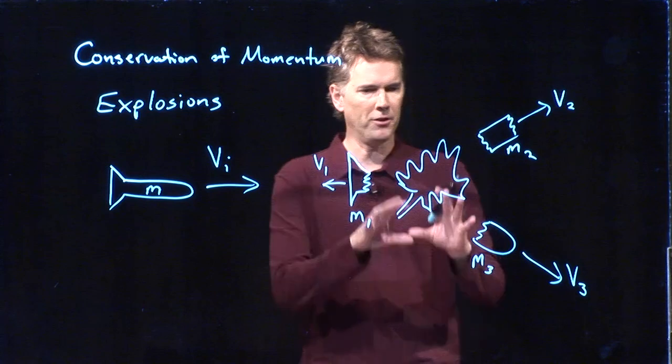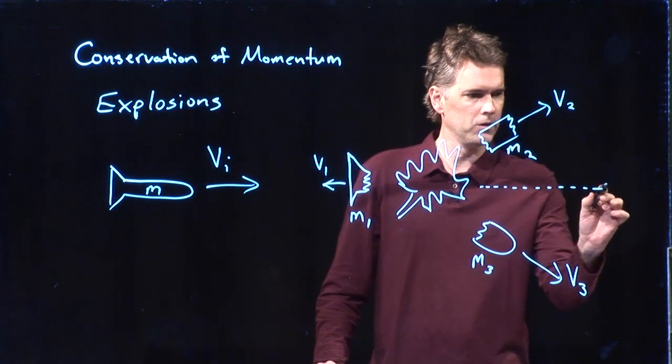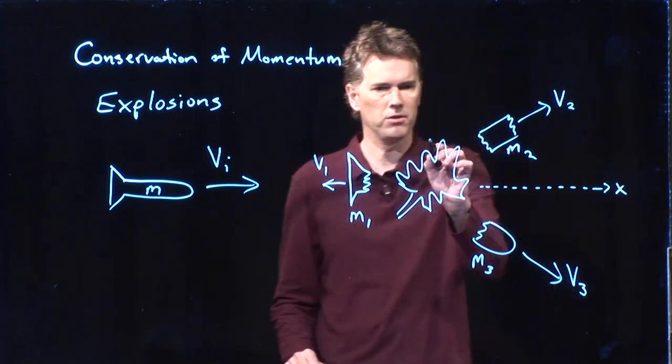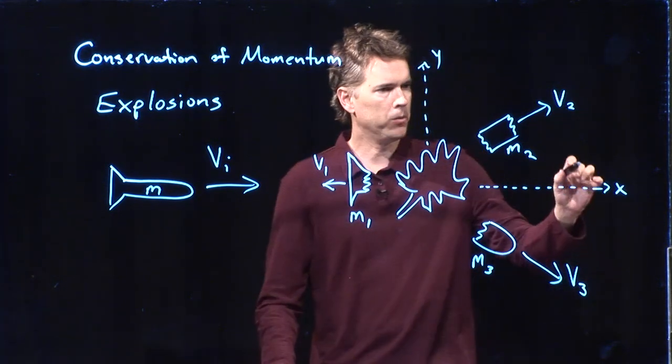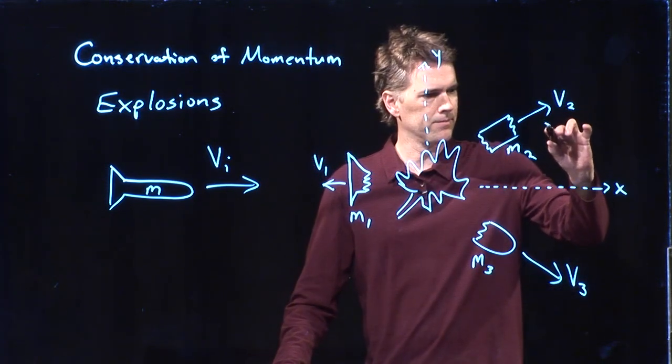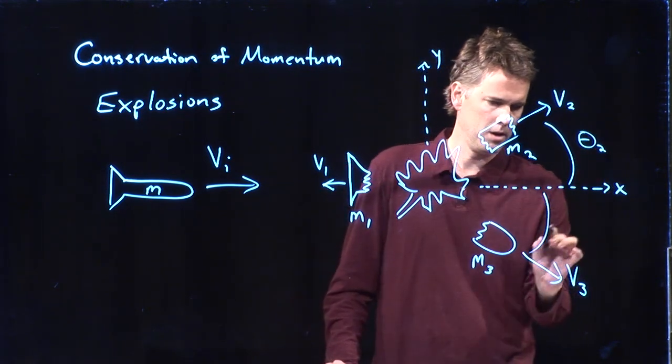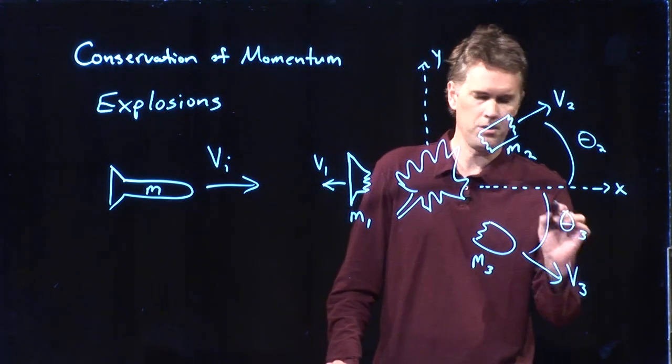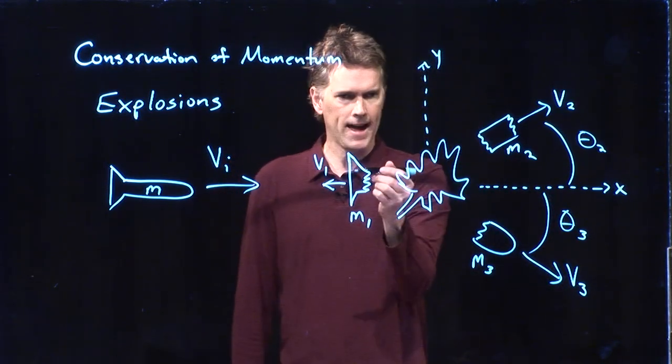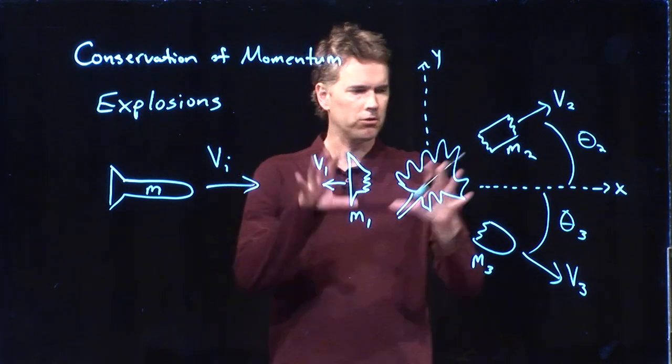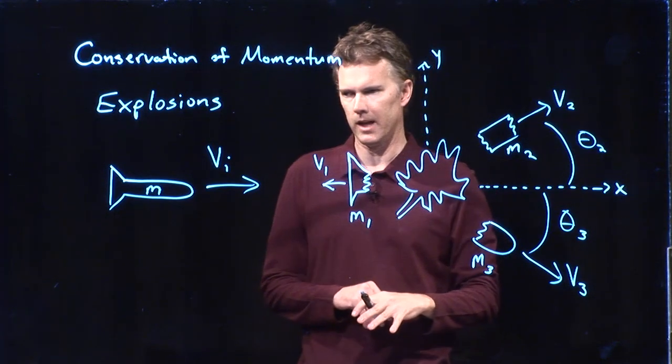So if this is where the explosion happens, it probably makes sense to label this the x-axis. We'll label that the y-axis. And then we need to define some angles here. Let's call this one theta 2. And we'll call this one theta 3. And this one is directly back along the negative x-axis. So this is what the problem looks like. And if you have numbers, you can worry about putting in the numbers at the end.